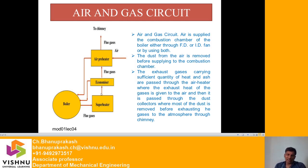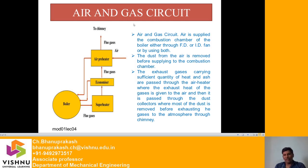The exhaust gases then pass through the economizer, where feed water absorbs heat from the flue gases. Next, these flue gases pass through the air preheater, where air taken from the atmosphere absorbs heat from the flue gases, gets heated, and is then fed back to the boiler — the cycle continues. After passing through the air preheater, the flue gases pass through the chimney and are finally released to the atmosphere. Before release, flue gases containing dust or ash particles are passed through a cyclone separator or dust collector to remove all dust and ash particles.